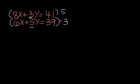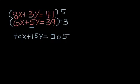So down here below, I'm going to do the multiplying. 5 times 8 is 40x, 5 times 3 is 15y, and 5 times 41 is 205. And then I'll do the same thing with negative 3, negative 3 times 6, negative 18x, negative 3 times 5 is negative 15y, that's good. And negative 3 times 39 is negative 117.